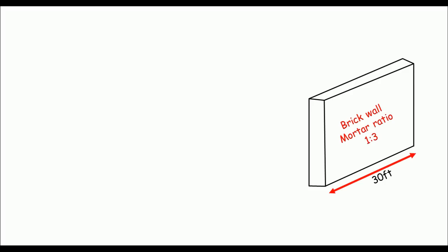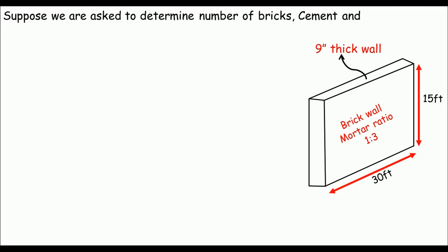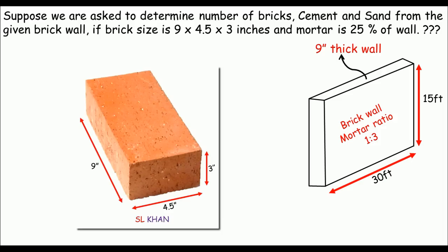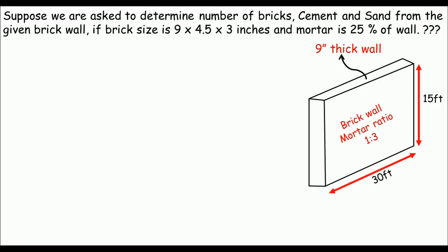Let's suppose we have a brick wall where the length is 3 feet, height is 15 feet, and thickness of the wall is 9 inches. We're asked to determine the number of bricks, cement, and sand from the given brick wall if the brick size is 9 × 4.5 × 3 inches, and the mortar is 25 percent of the wall.